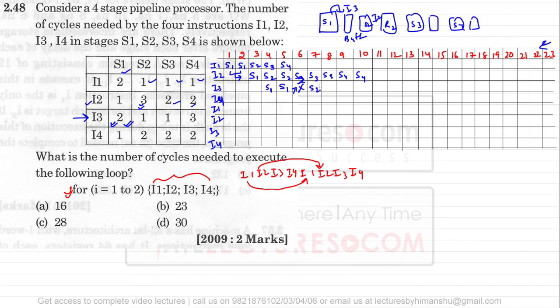I3 requires only one clock cycle in stage S2, but S3 is available only at the ninth clock cycle, causing a stall. The cross symbol means the pipeline stalls — no instruction executes in that slot. I3 enters stage S3 at the ninth clock cycle, requires one clock cycle there, and then enters stage S4 at the eleventh clock cycle.